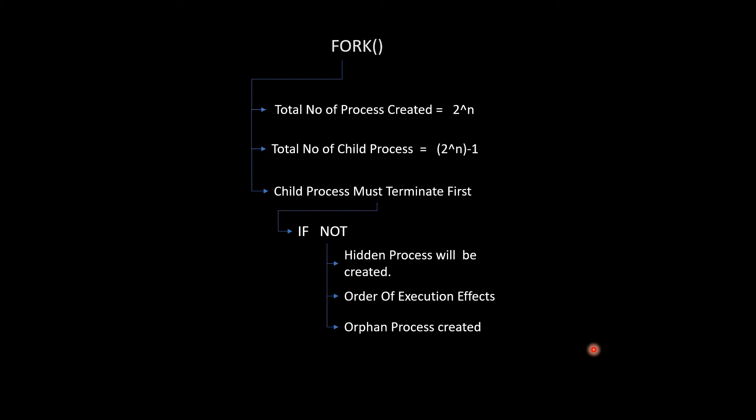To avoid orphan and zombie processes, we use wait and sleep. The wait function tells the parent to wait so that the child process can execute first. Let's move to the practical section where you can understand how wait is applied and what happens when we don't use it.